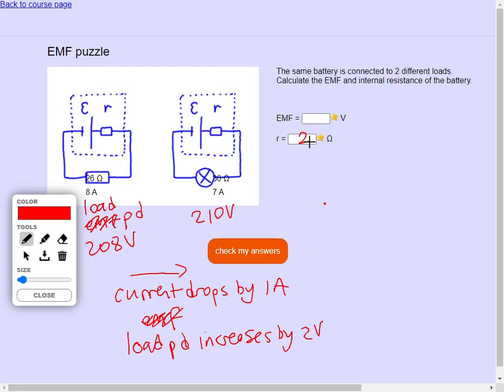And what we can then do is we can say well I've got 8 amps through the internal resistance. And that must mean 16 volts of the difference. And I can add 208 plus 16 and that gives me 224.